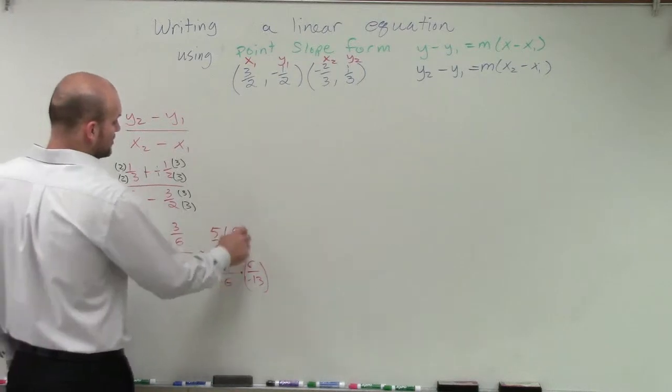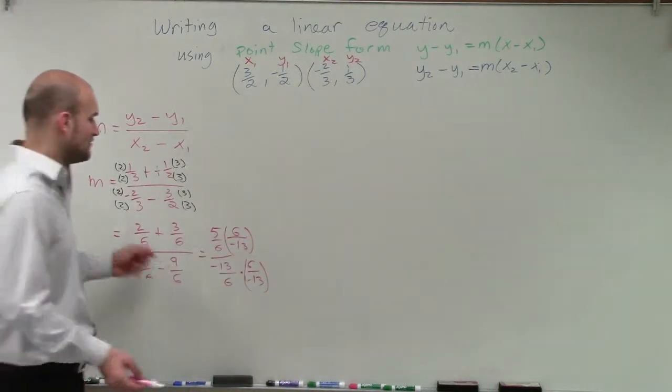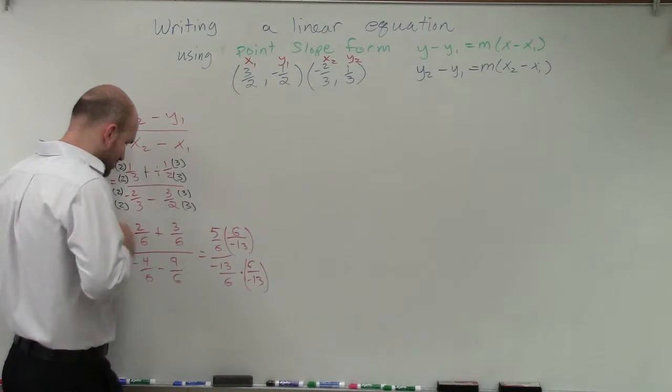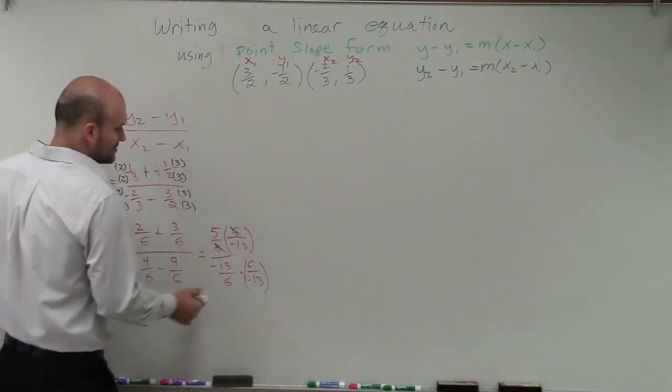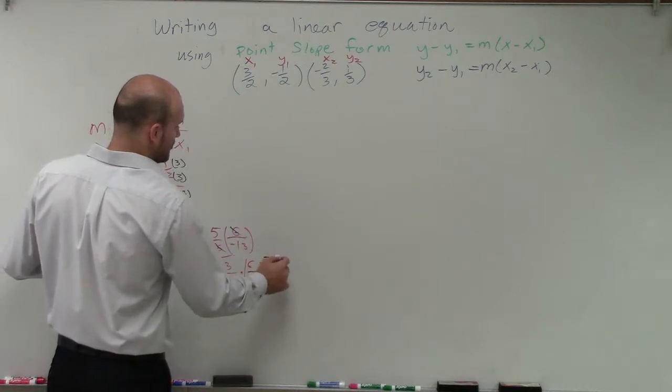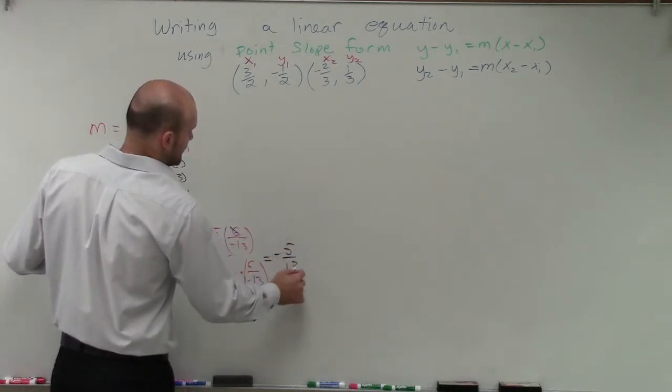Remember, as long as we're multiplying on the top and the bottom, we're fine. We're not changing our fraction. Well, the helpful thing about multiplying by this reciprocal is you can see that now these 6's divide up to 1. So we're left with the slope of negative 5 over 13.